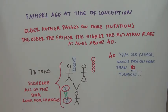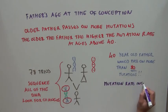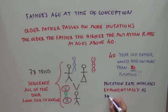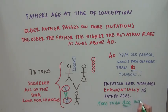So the mutation rate per year of the father's life seemed to increase exponentially as the father ages. Some of the older fathers that were studied here had passed on more than 100 mutations to their child.